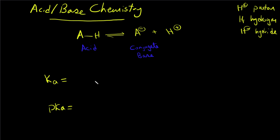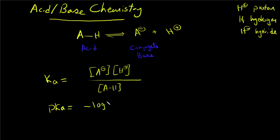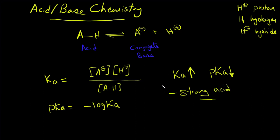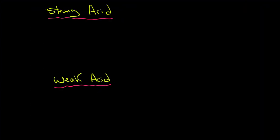The acid equilibrium constant Ka equals the concentration of the conjugate base times the concentration of the proton, divided by the concentration of the acid. The pKa equals negative log Ka. A very high Ka means a lot of dissociation, a strong acid, and therefore a small pKa.